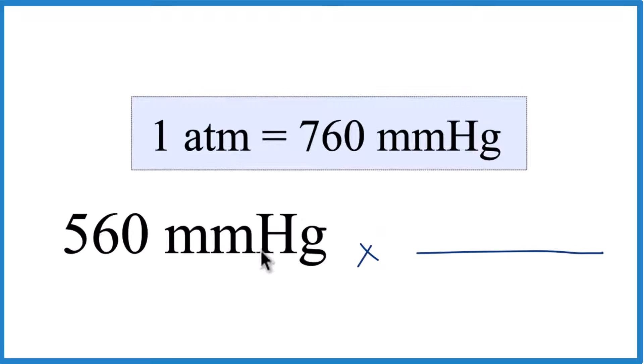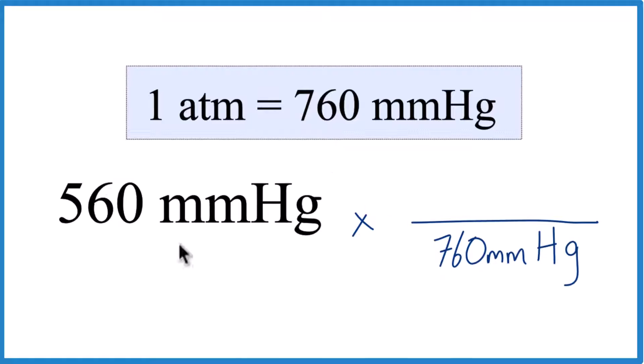So we want to get rid of this millimeters of mercury. We want this to cross out. So we're going to put the 760 millimeters of mercury in the denominator. That way they'll cross out. The one atmosphere, let's put that up top because that's what we want to end up with.